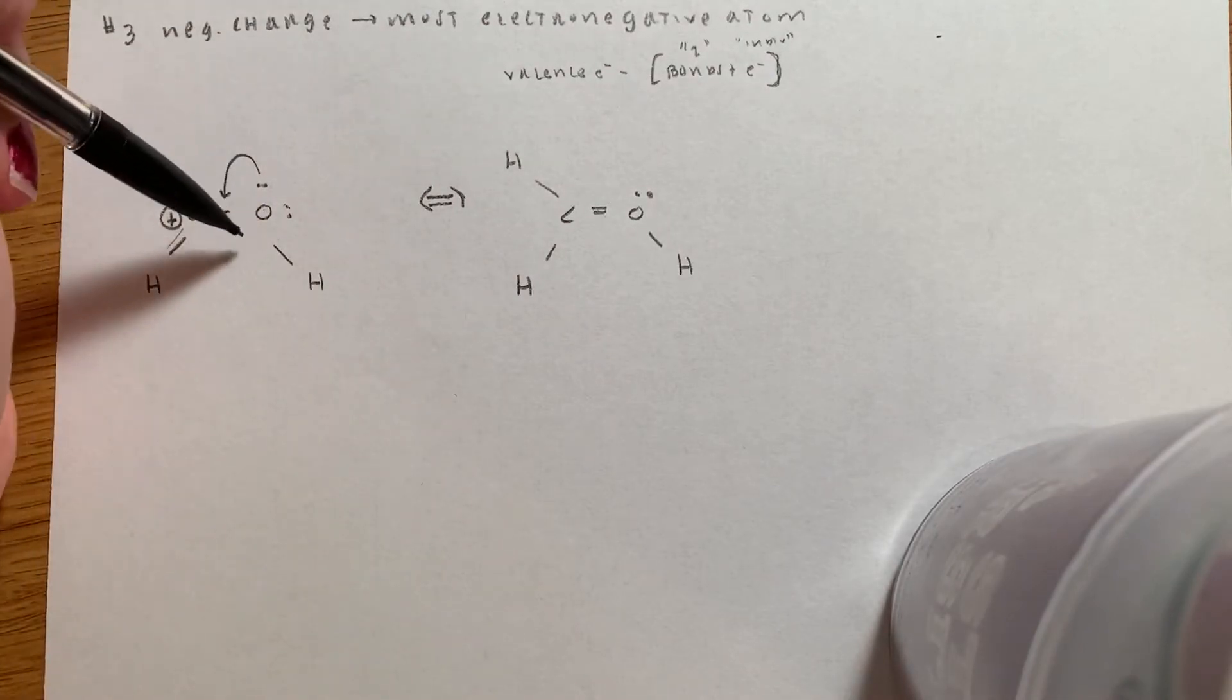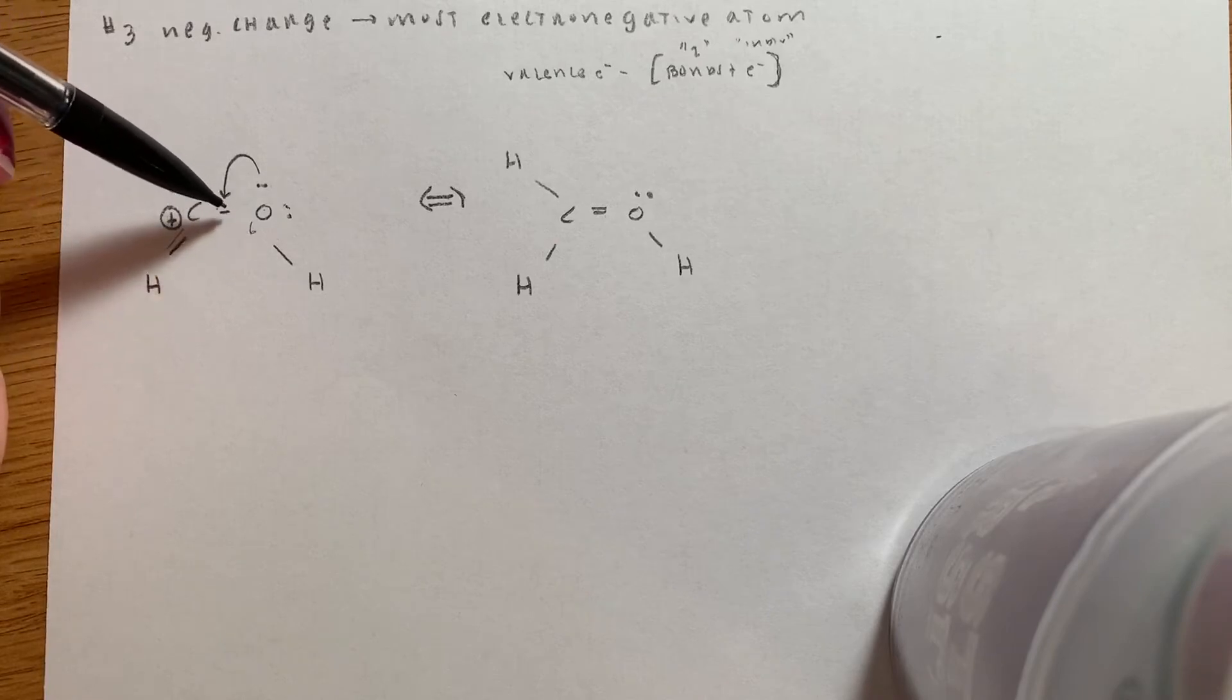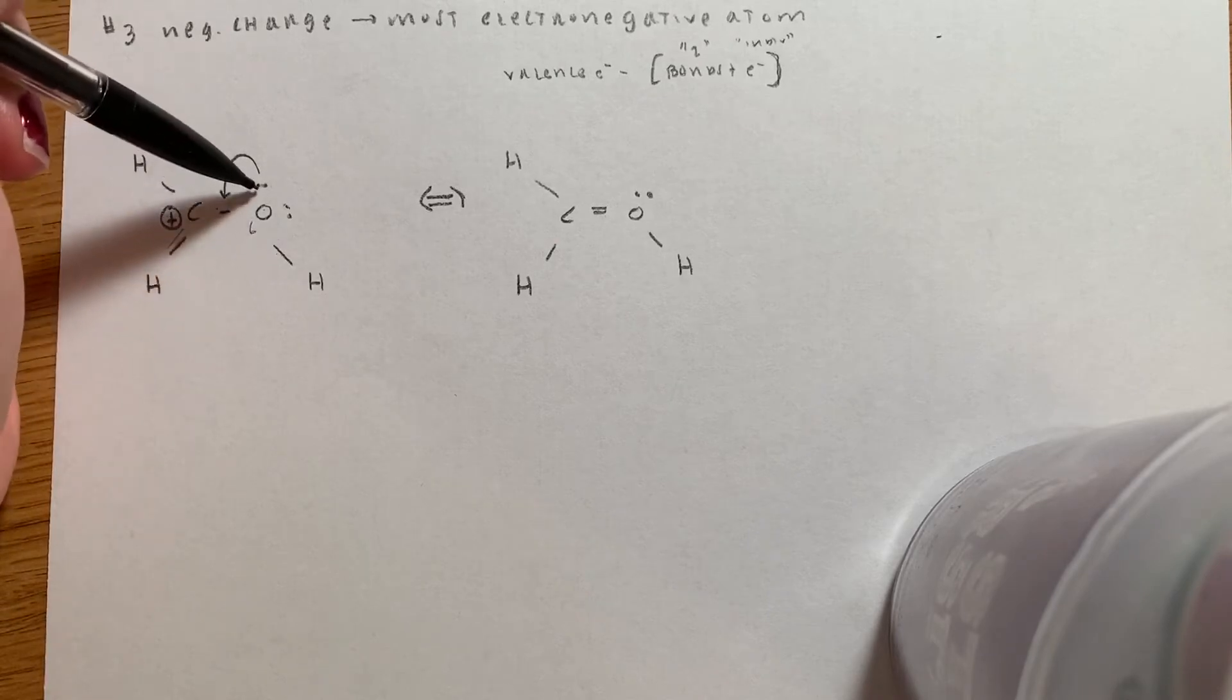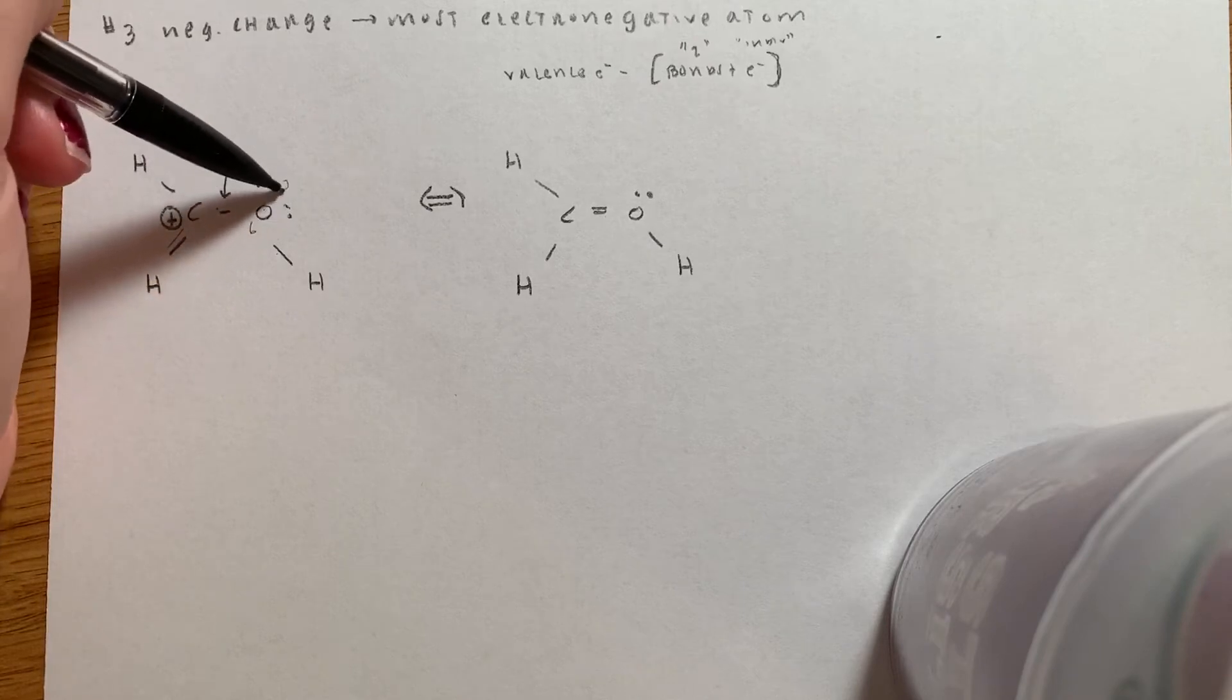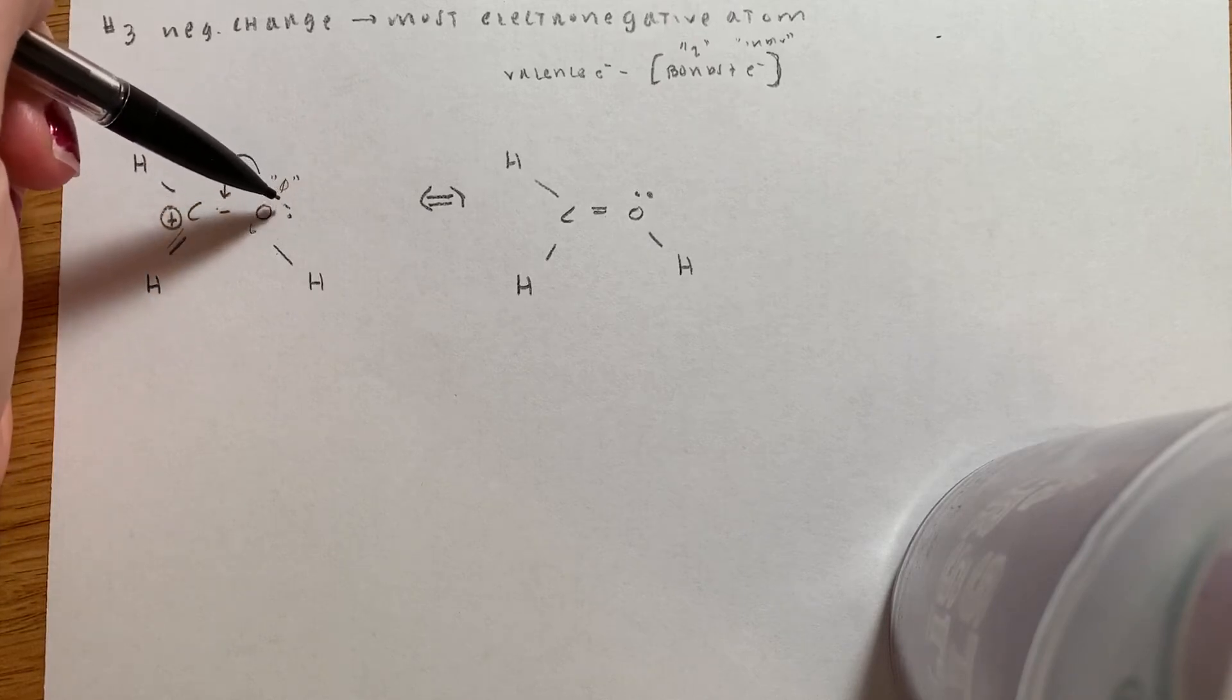This oxygen has six valence electrons minus one, two, three, four, five, six. So this oxygen has a zero formal charge, but we don't really like zeros. They're kind of redundant.